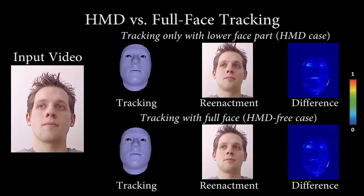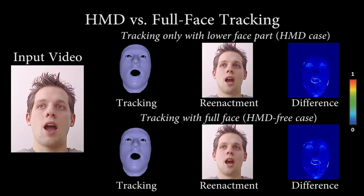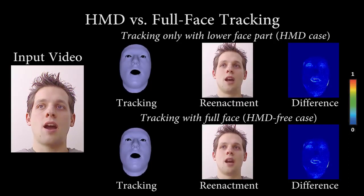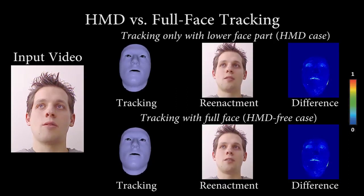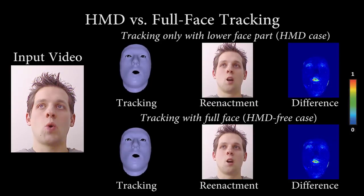Here we evaluate the loss of information when only the lower part of the face is visible. To this end, we self-reenact the actor. The color difference on the right shows that our results are very close to the ground truth video stream, even when a significant part of the face is occluded.